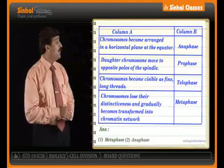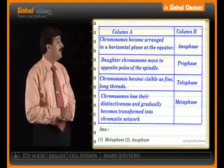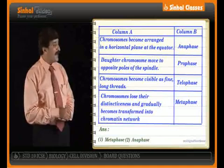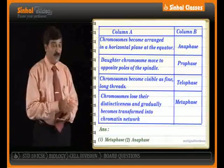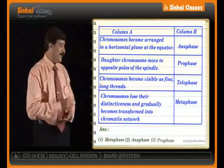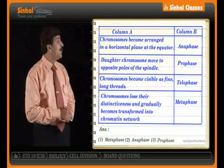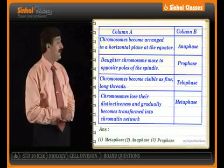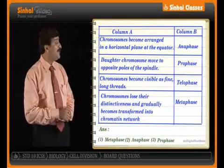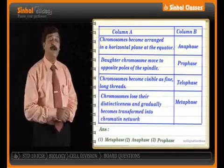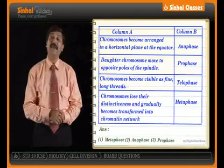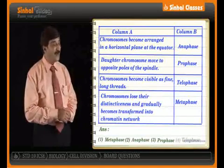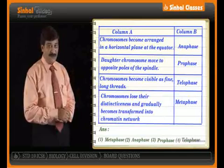Take the third one: chromosomes become visible as fine long threads. The answer should be prophase. And in the fourth one: chromosomes lose their distinctiveness and gradually become transformed into chromatin network. Here the answer should be the remaining one, that is telophase.